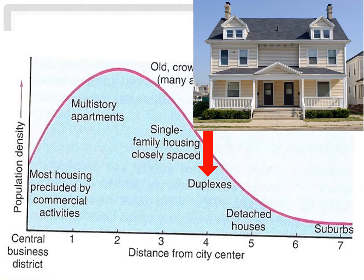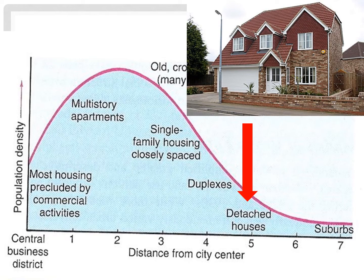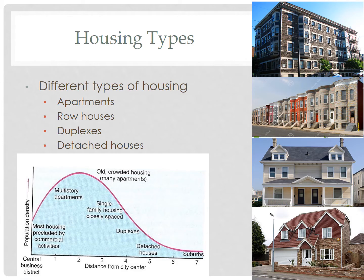As you get onto less accessible and thus less valuable land, housing types become more spaced out, leading to lower population densities. Duplexes feature just two families, each in their own single-family units that share a wall down the middle. Then, finally, the single-family detached homes of the suburbs, which are the lowest density because the land is relatively cheap compared to other parts of the urban area. So, wealthier families will live far removed from the city center — at least in the United States — and commute to work using their personal cars. They can buy larger parcels of land with homes that have more square footage and big backyards.